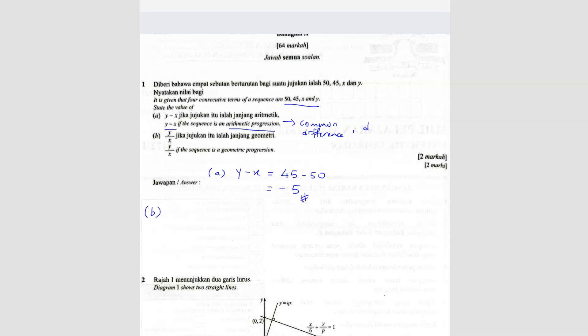Question B: find the value of y over x if the sequence is a geometric progression. In a geometric progression, you should have a common ratio, which is the r value. In this case, y over x is the common ratio, so it should be the same as 45 divided by 50. Simplifying by 5, you get 9 over 10. This is your answer, or you can write 0.9.